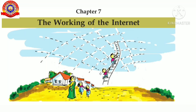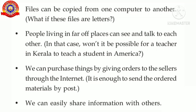Try to imagine a larger form of this network — a network that includes all the computers across the world. There exists such a global network today, and this huge network with infinite potential for communication is called the internet. Some advantages of the internet: files can be copied from one computer to another, people living in far-off places can see and talk to each other, we can purchase things by giving orders to sellers, and we can easily share information with others.